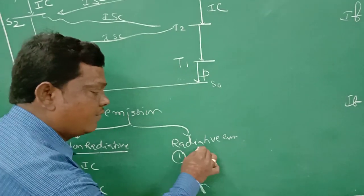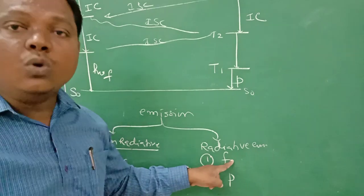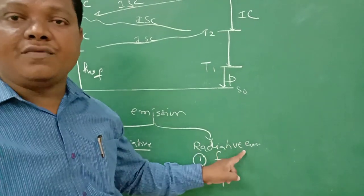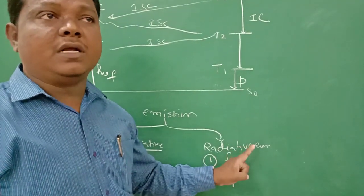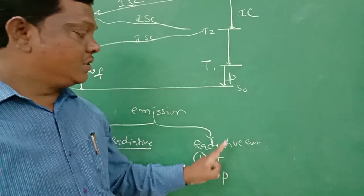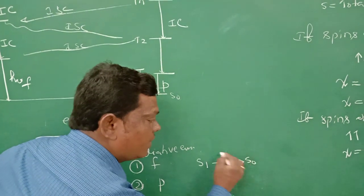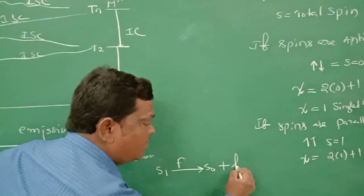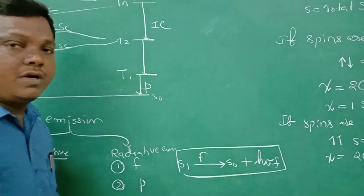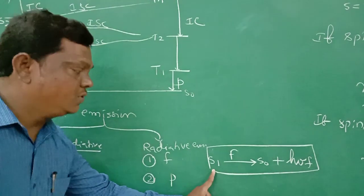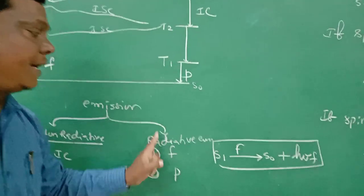Coming to radiative emission — these involve the emission of radiation and are of two types: fluorescence and phosphorescence. Fluorescence is a radiative emission; it is a fast process, completed within 10 to the power of minus 8 seconds. Fluorescence involves the electronic transition from S1 to S0, with emission of radiation.